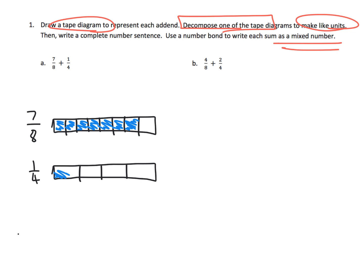I'm going to shade in one of those fourths. Now parents and teachers, our students need the opportunity to think: which one of these tape diagrams are they going to decompose so that we can get common denominators or like units? We want our students to see that we want to decompose the fourths into smaller units so we can have common units. If we cut each one of those fourths into two pieces, we now have eighths. So instead of having one fourth, we now have two eighths.